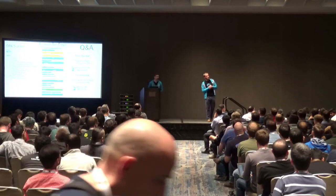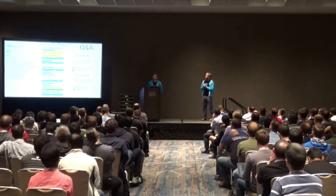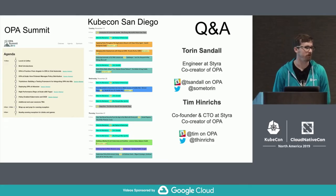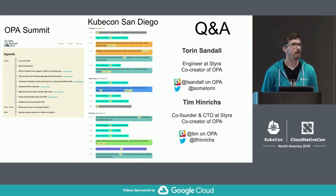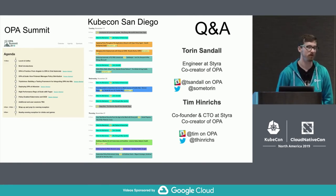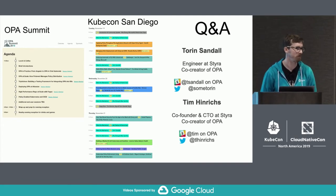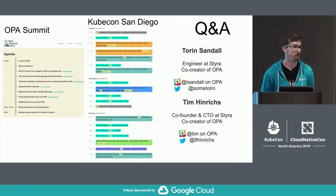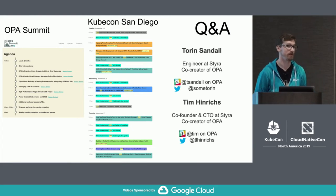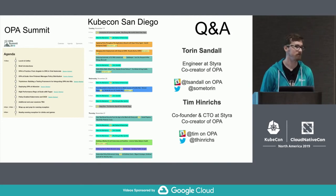Question: is there support for validating cryptographic signatures? We do have built-in functions to verify signatures on JSON web tokens today, supporting RSA and other algorithms. We don't have primitives to do that on a raw array of bytes. Built-in functions are actually the easiest way to contribute to OPA. For example, someone wanted to do something involving bit manipulation, which isn't particularly fun to do in Rego today. If you have use cases that require built-ins, please submit a patch.